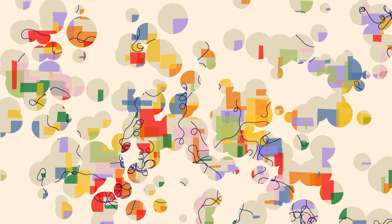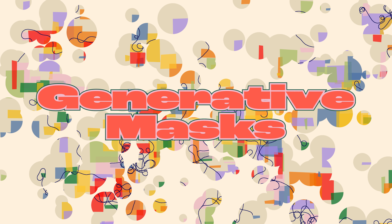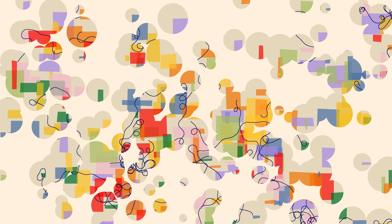Hello everyone, my name is Hadeel and today we're going to talk about masking shapes in generative art. This is basically what we are going to recreate — a background layer with lots of offset rectangles with random corners and some 3D noise, and then a top layer with a mask made of random circles layered on top of each other.